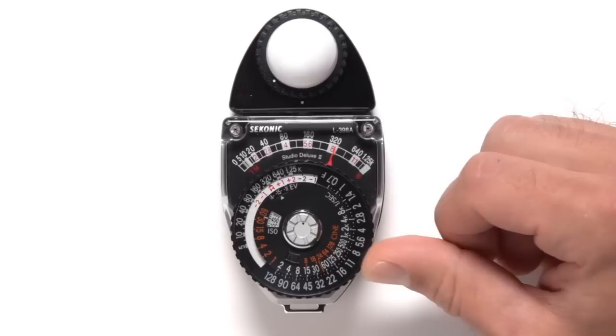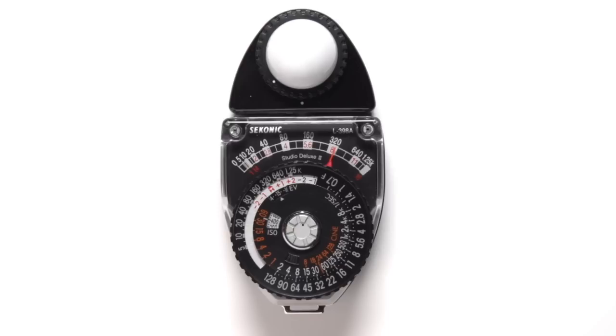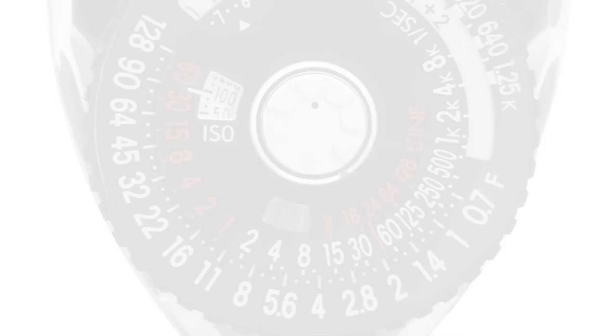Next, turn the black dial ring so that the black pointer on the computer dial lines up with the same foot candle value that is indicated by the needle. Now you will have an accurate exposure in EV, as well as numerous aperture and shutter speed combinations that will all give you an accurate exposure when transferred to your camera.